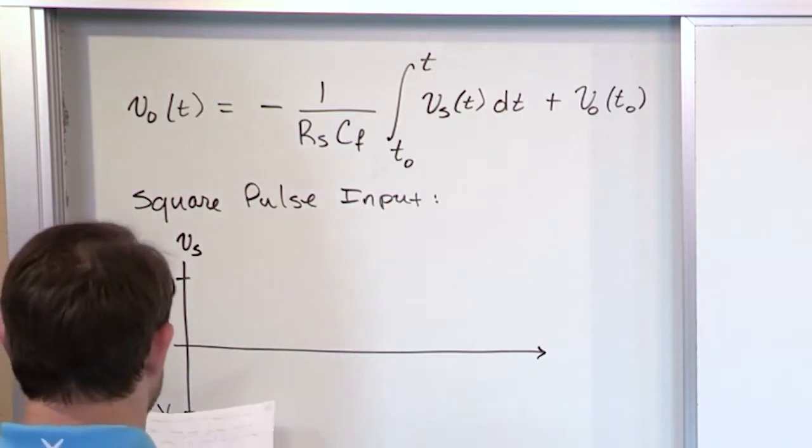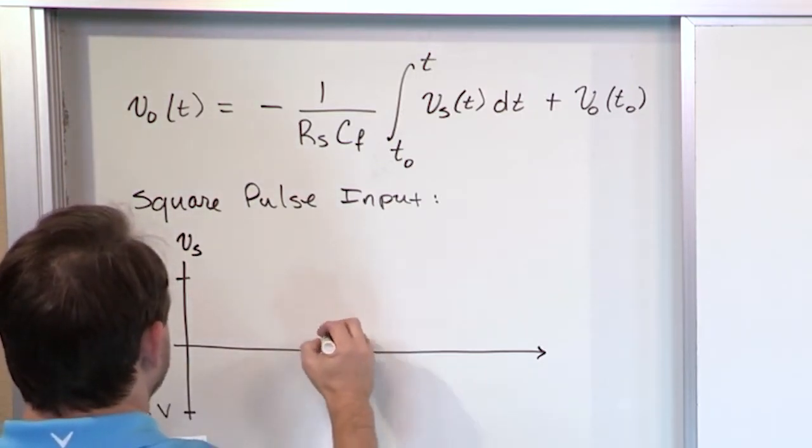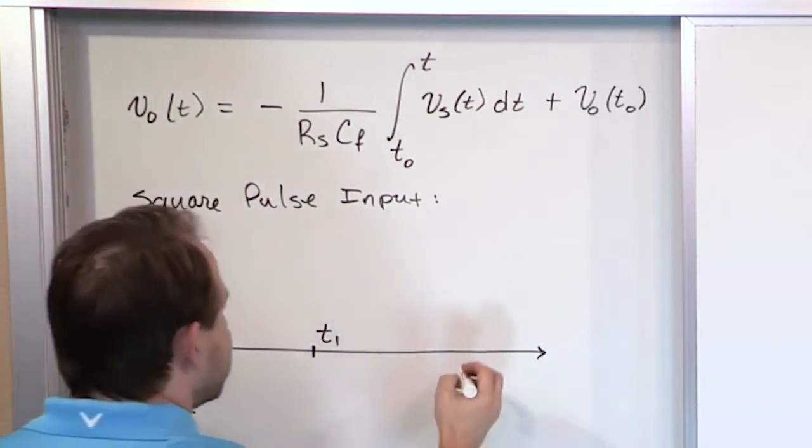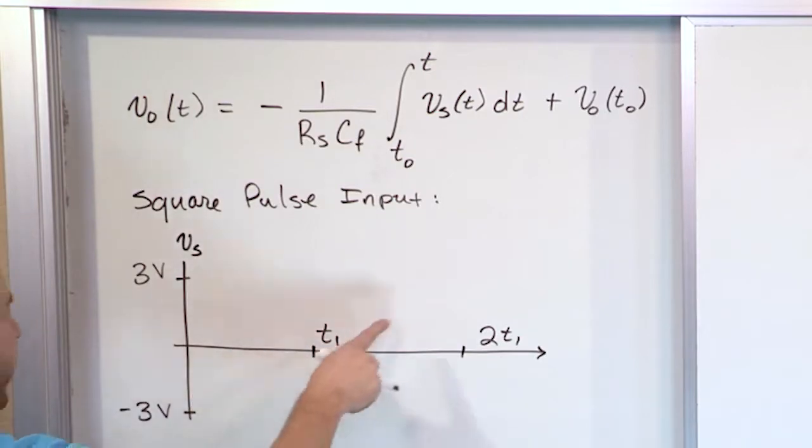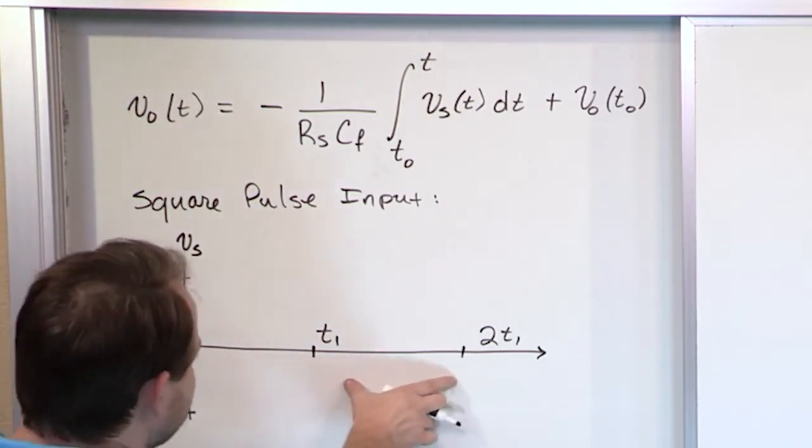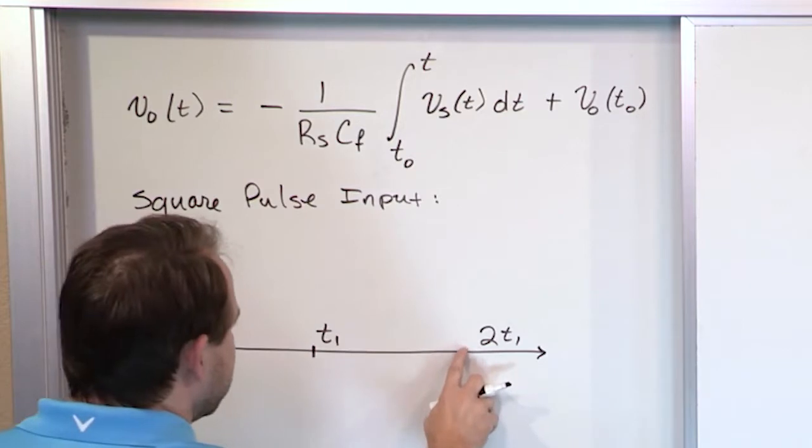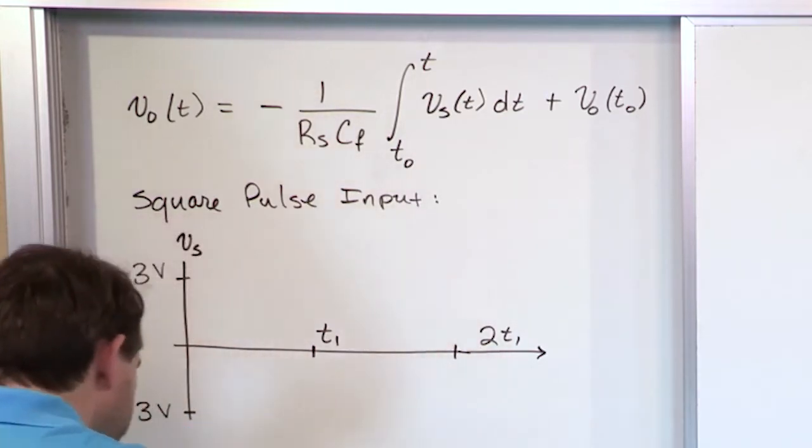And then over here, right here, we're going to call this T sub 1. And then over here, we're going to call this 2 times T sub 1. So I could put 1 second, 2 seconds, 3 seconds, but it's going to make the math a little bit more general and powerful for you to see it like this. These widths should be pretty close to being the same.